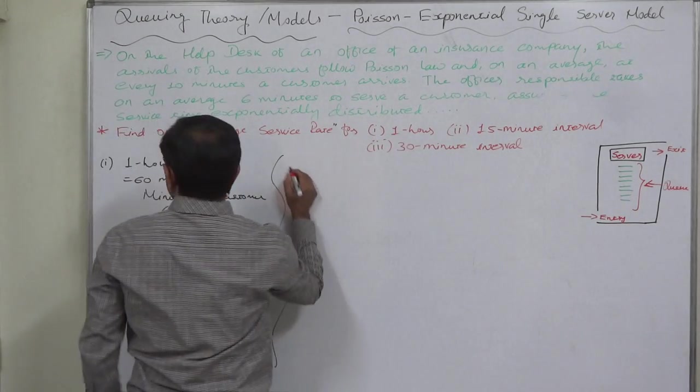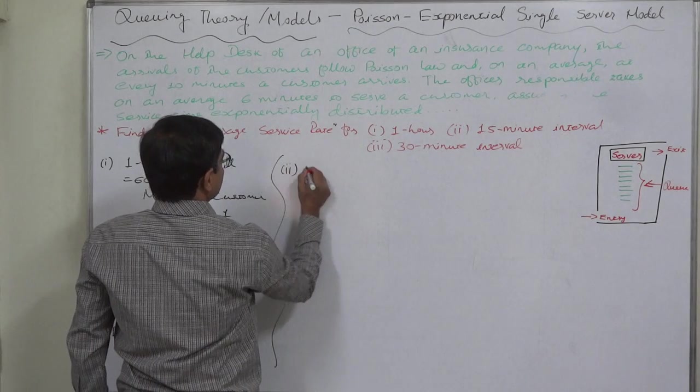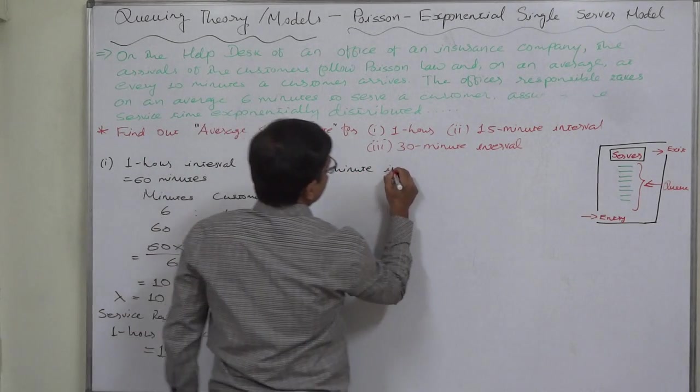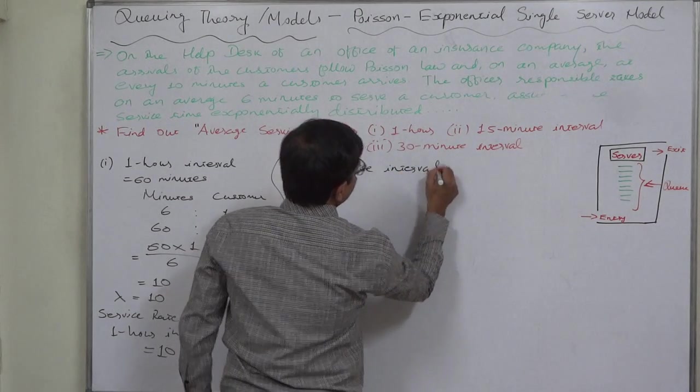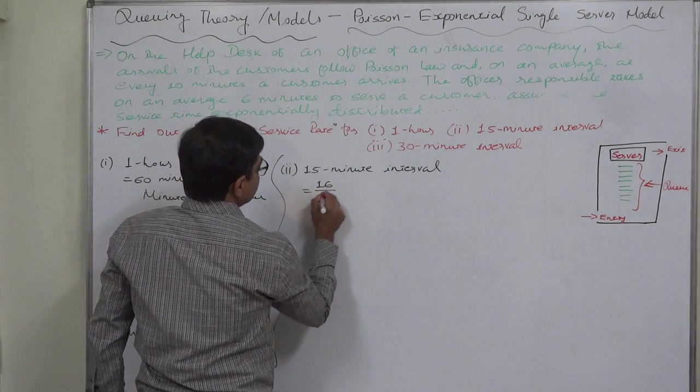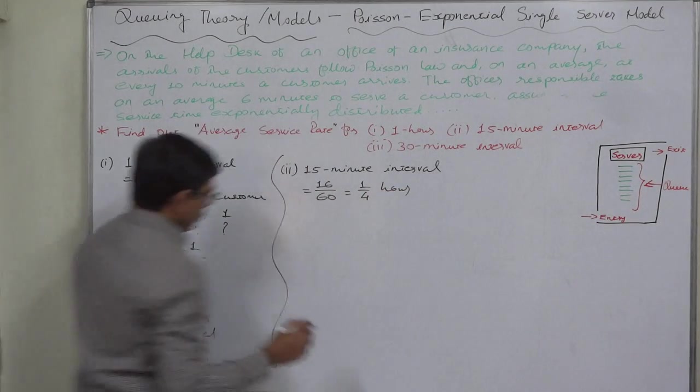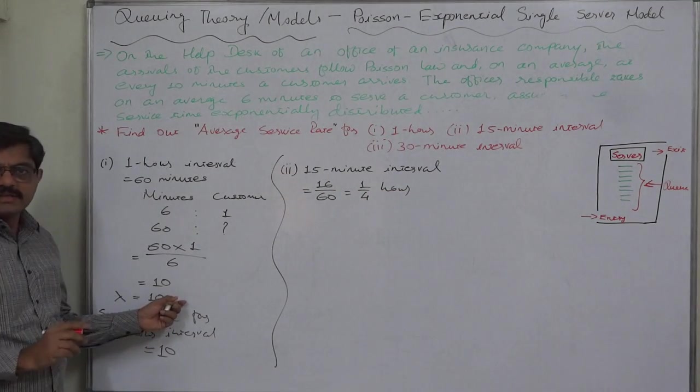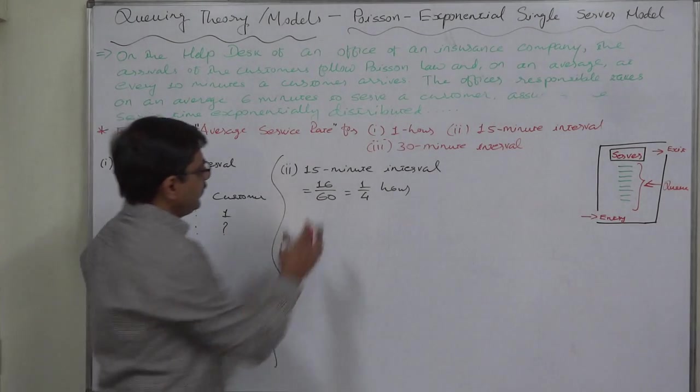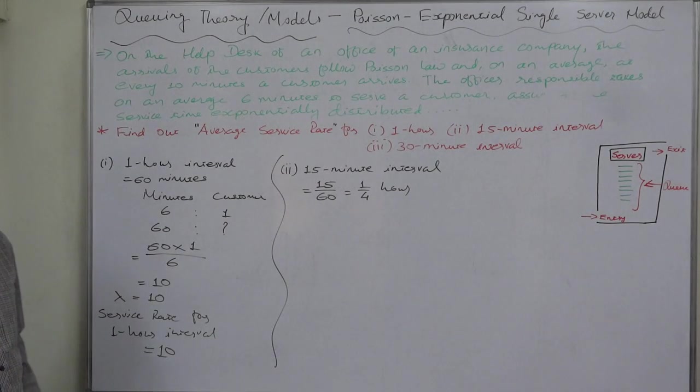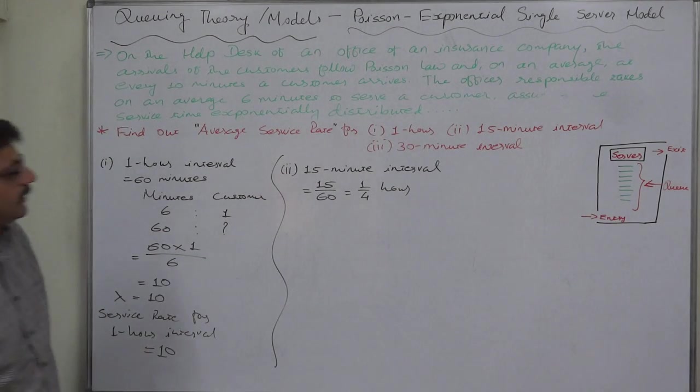Now second is 15 minutes interval. 15 by 60 is equal to one-fourth hour. So now we have the hourly service rate; we just multiply it by 15 by 60 or 1 by 4 hour. The result will be service rate for 15 minute interval.